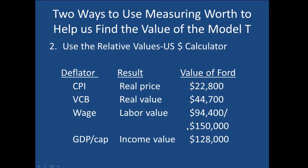Our third and fourth results, the labor value, come from using the unskilled wage or the production worker wage as the deflator. This is better if we want to know how much people would have had to earn to pay for a Model T, rather than what the money could buy in goods and services. Wages have risen faster than prices and consumer budgets — recall that the CPI rose about 3% per year on average, while the wage increased about 5% per year — so we get an even larger estimate for the value of the Model T.